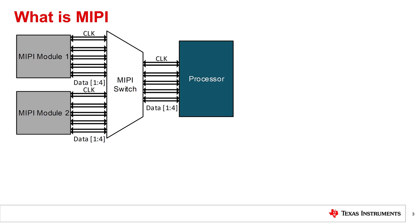MIPI is a protocol primarily used to interface with a processor on mobile devices. A MIPI system consists of data line groups called lanes which work together to create a link whose total bandwidth defines the resolution and bit rate of the system.